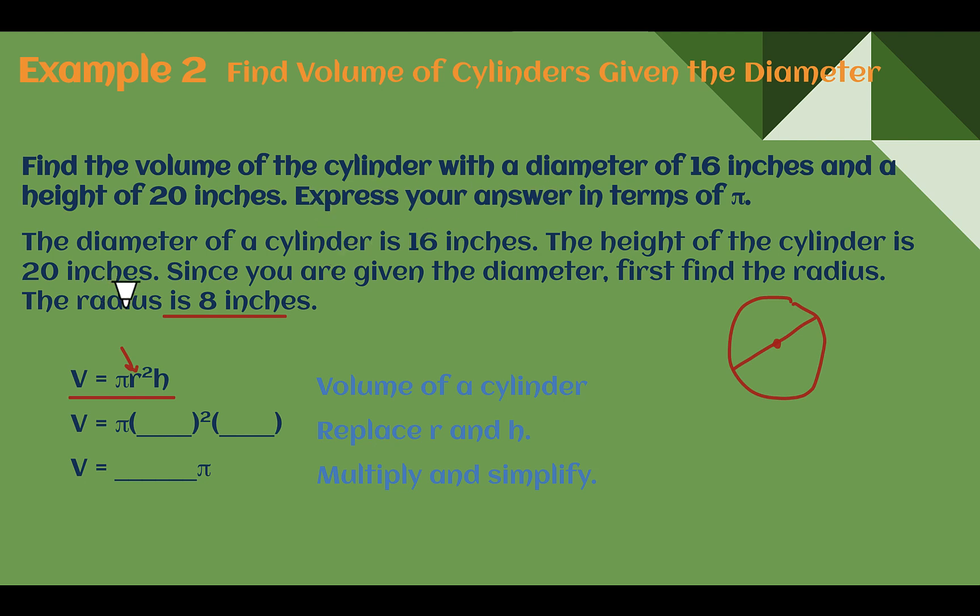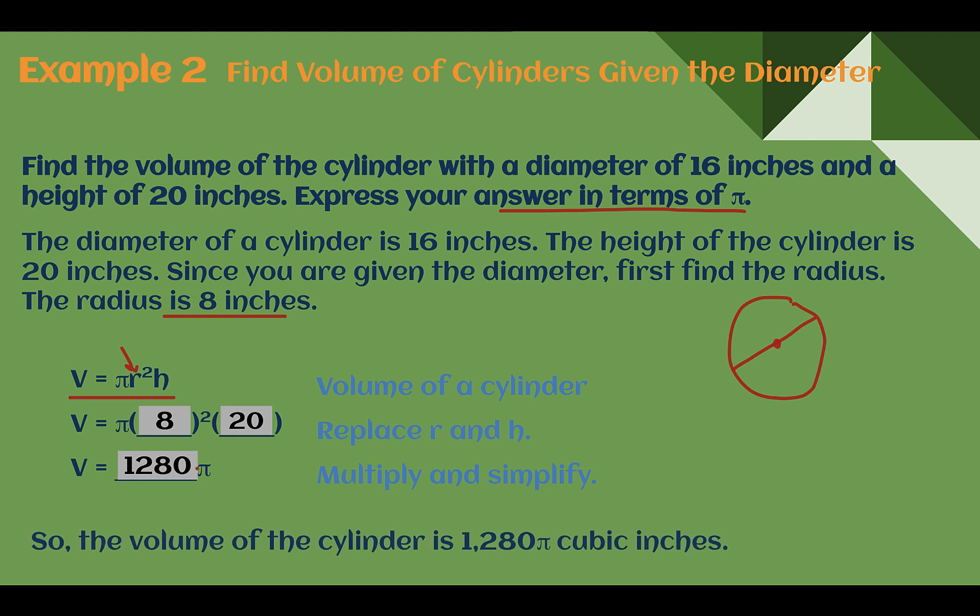Now that we know the radius, we can plug stuff in. So radius is 8. Height was 20. Let's calculate it out. 8 times 8 is 64. 64 times 20 is 1,280. Again, here we need to decide, are we using a calculator to multiply out with π? It tells us to express our answer in terms of π, so we need to leave it in the answer. So the volume of that cylinder would be 1,280π cubic inches.